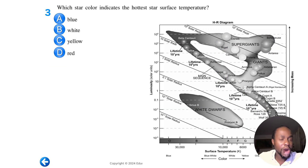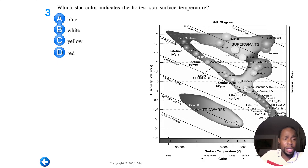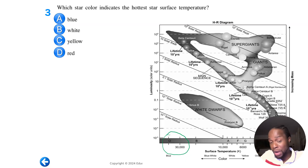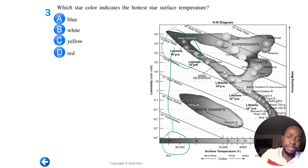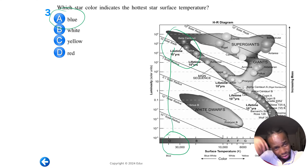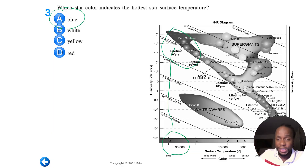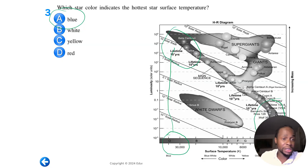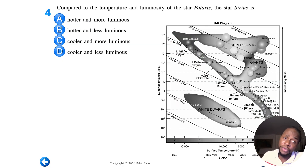Question three: Which star color indicates the hottest star surface temperature? Blue, definitely, because blue represents temperatures around 30,000 Kelvin. White and yellow are average — our Sun is yellow and is average. Red stars, which are red dwarfs, are the coolest and sit on the right side of the HR diagram with very low temperatures. So the answer is blue.